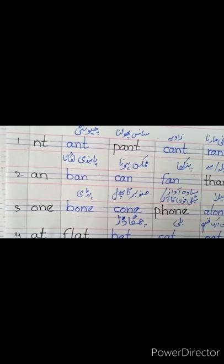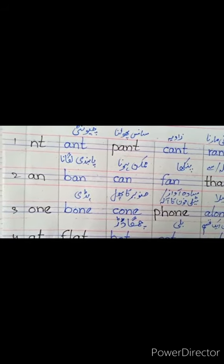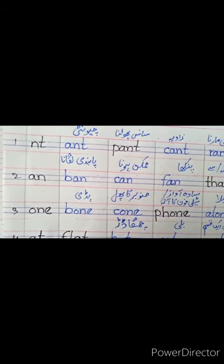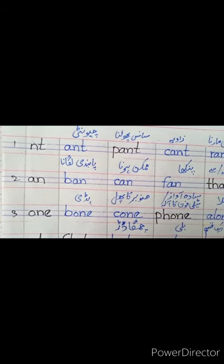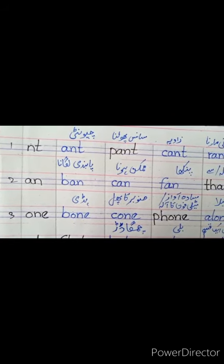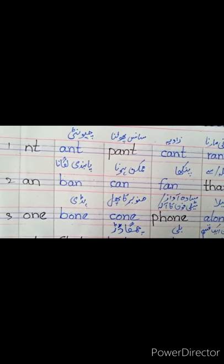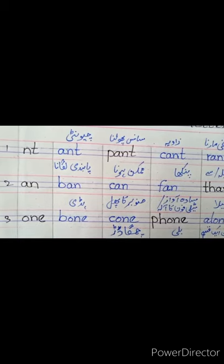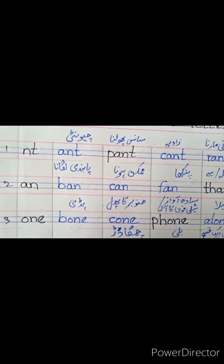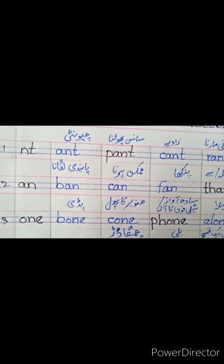Second group is A, N. اب آپ نے ایسے words لکھنے ہیں جو A, N پہ end ہوتے ہیں — ختم ہوتے ہیں. So first one is 'ban' — B, A, N. Ban means پابندی لگانا، منع کرنا.